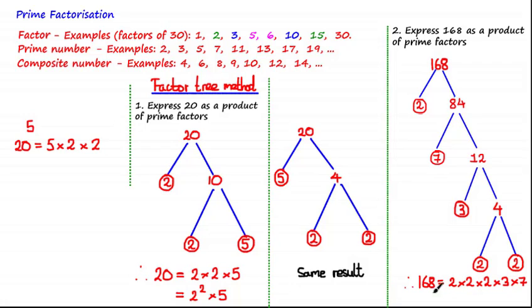So therefore, 168 is equal to 2 times 2 times 2, which we get from here, here and here, multiplied by 3, which we get from here, multiplied by 7, which we get from here. And this can also be expressed as 2 cubed multiplied by 3 multiplied by 7.